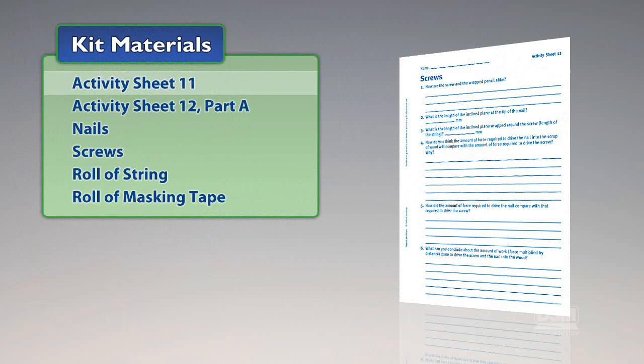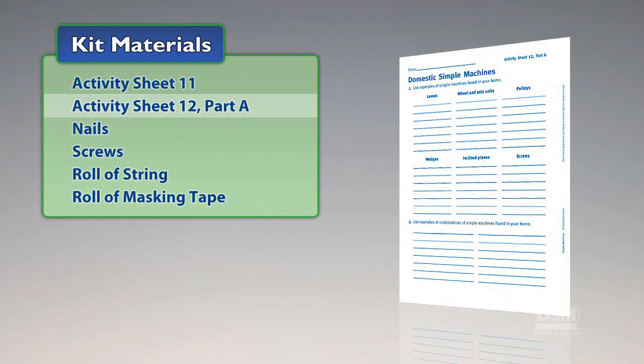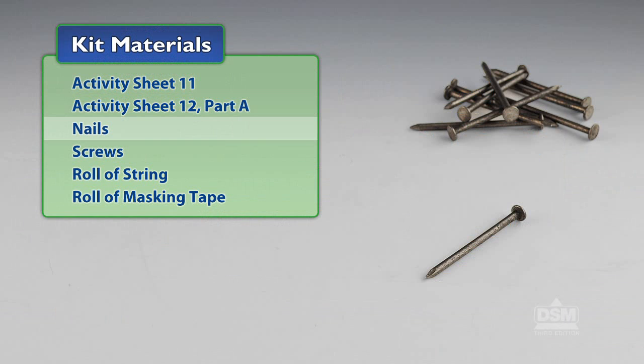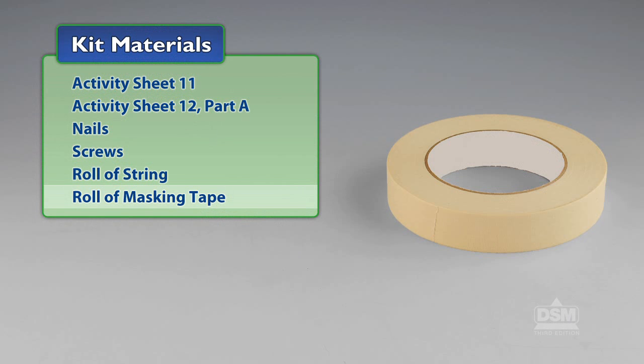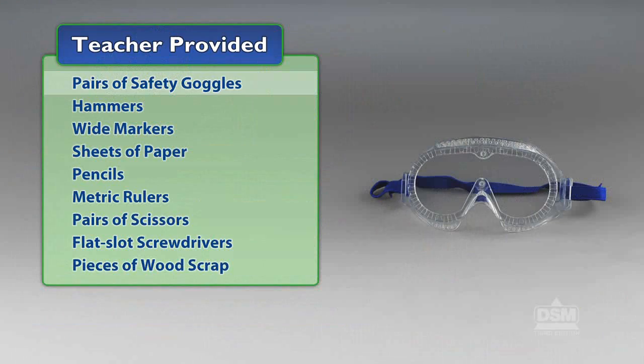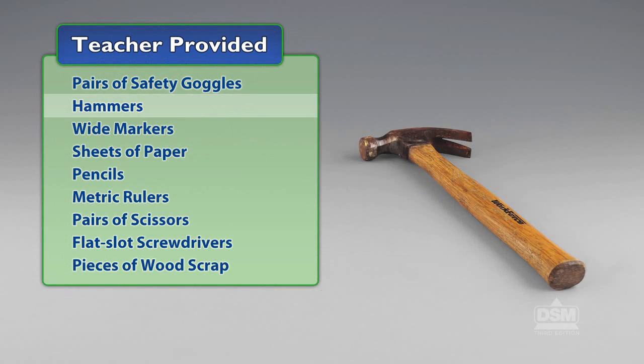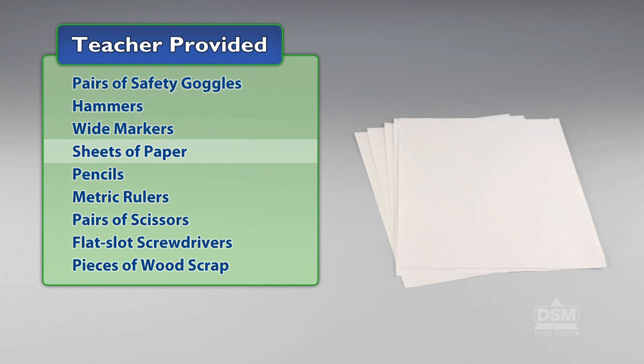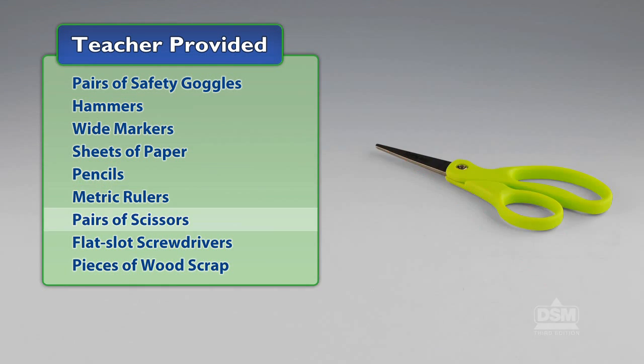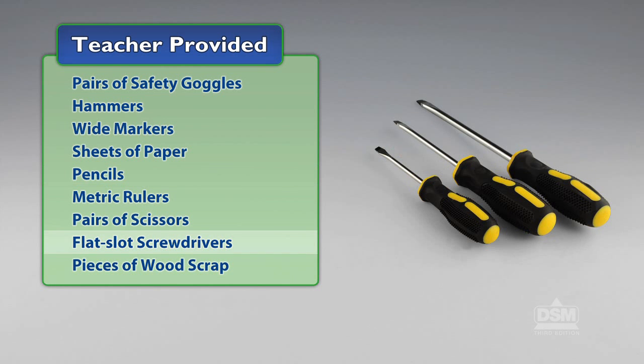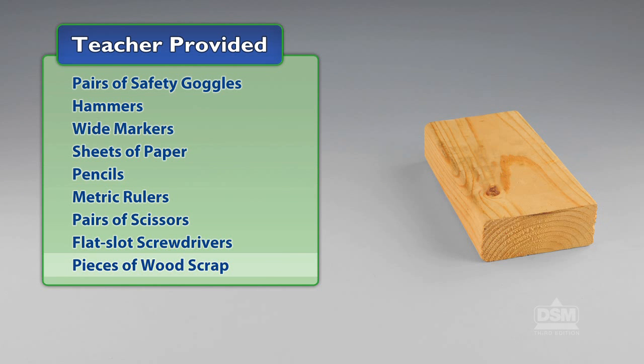You will need the following materials from the kit: activity sheet 11, activity sheet 12 part A, nails, screws, roll of string, and a roll of masking tape. You will also need to provide pairs of safety goggles, hammers, wide markers, sheets of paper, pencils, metric rulers, pairs of scissors, flat slot screwdrivers, and pieces of scrap wood.